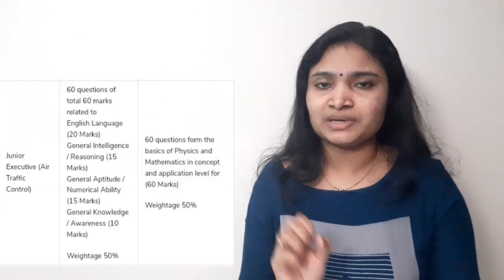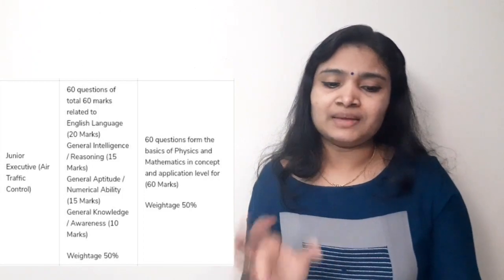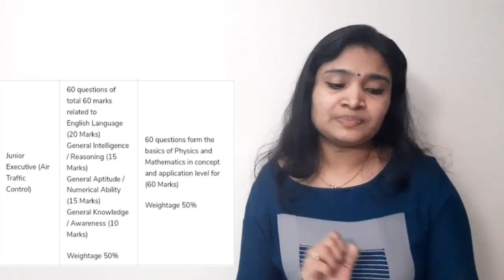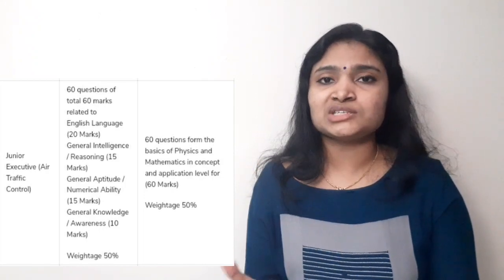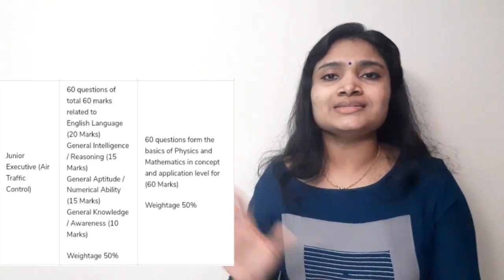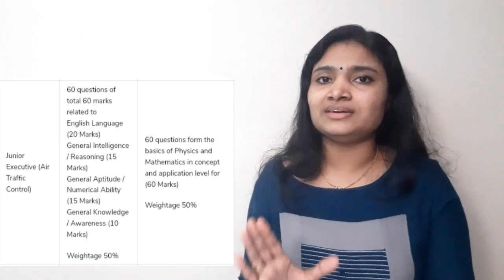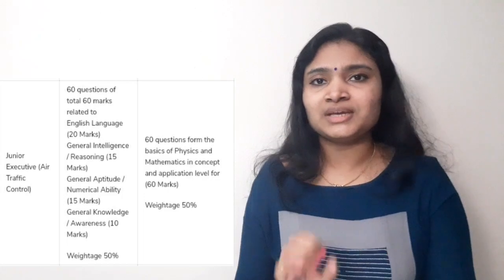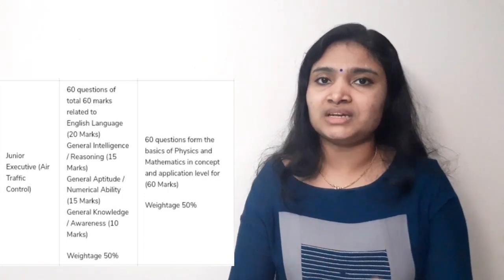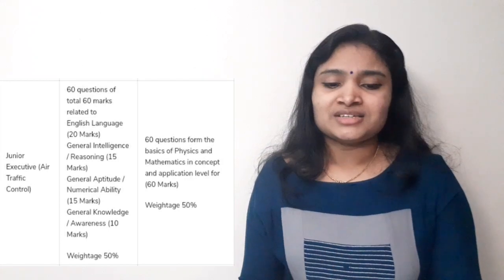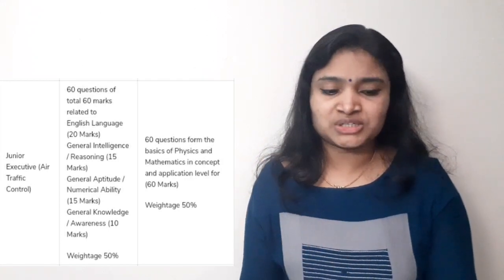Moving on to the exam pattern — there are two stages in the question paper for the online examination. There is Part A, which is a general section having 60 questions, and Part B which consists of questions from Physics and Maths, again 60 questions. Totally 120 questions. The total time duration is 120 minutes. The questions will be in both English and Hindi mediums, and there is no negative marking.